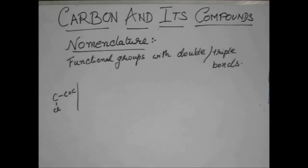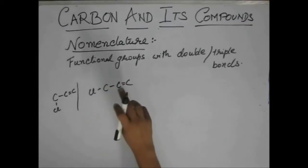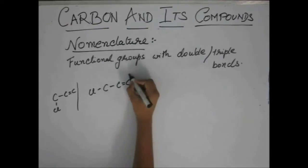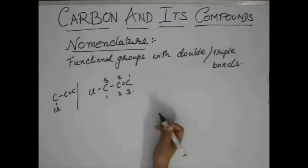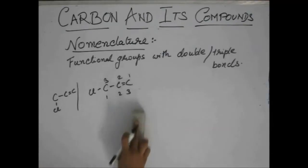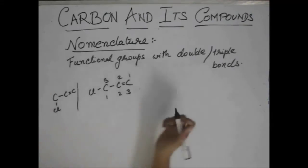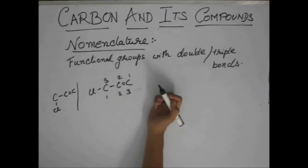If we have this compound, what the preference actually means is that the numbering will start from the nearest carbon of the more preferred group. See, it will start from here and not one, two, three. So, we have one, two, three over here.